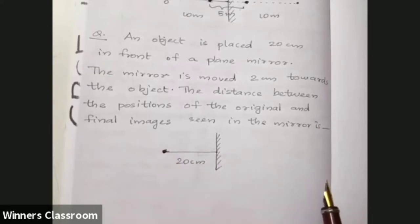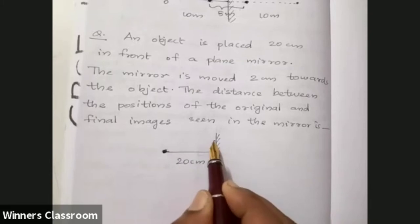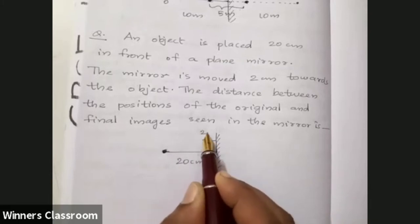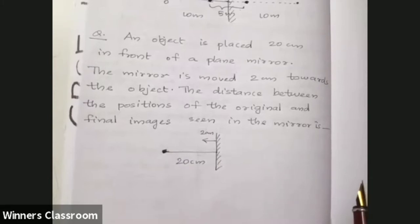The mirror is moved 2cm towards the object. What is the distance between the positions of the original and final images?